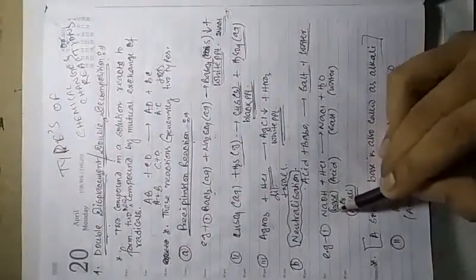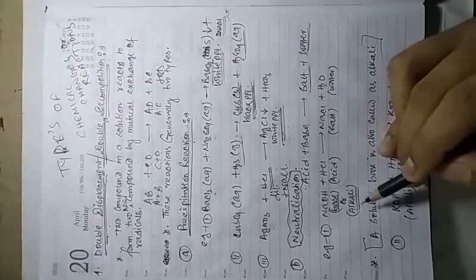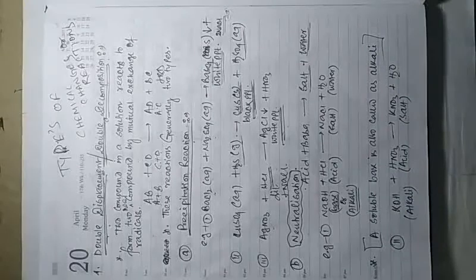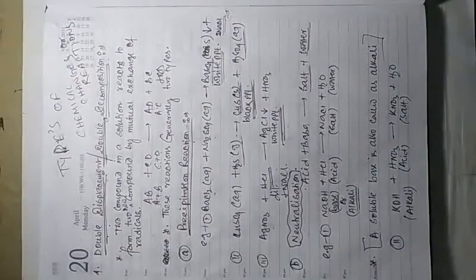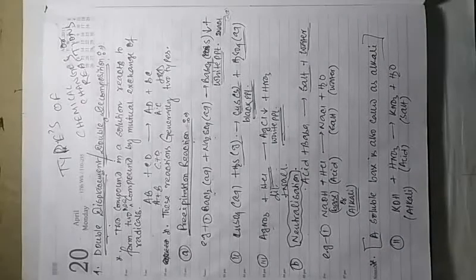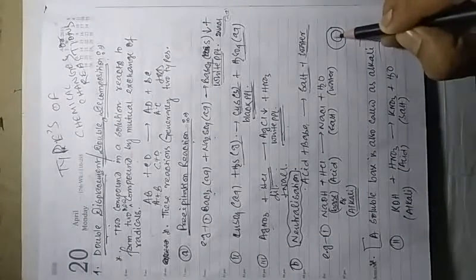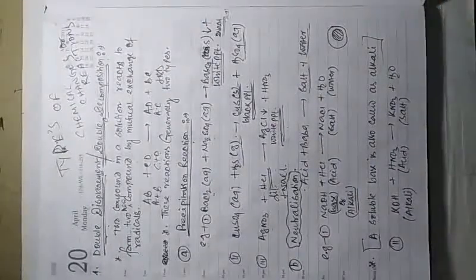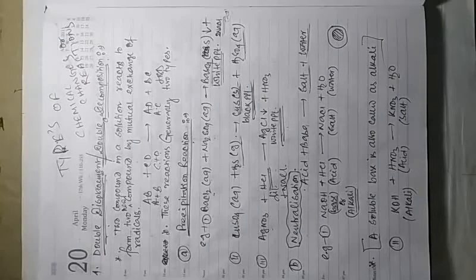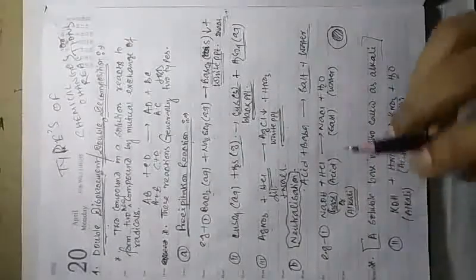A base is generally a metal oxide or metal hydroxide, basic in nature, because metals are electropositive. But some metal oxides or metal hydroxides that are soluble in water are categorized as alkali. So alkali is also a base — just a soluble base. Sodium hydroxide is alkali means it will dissolve in water.